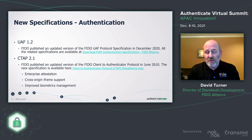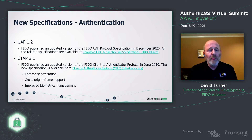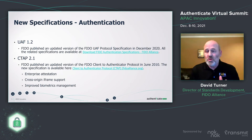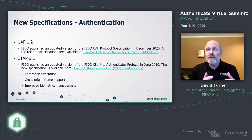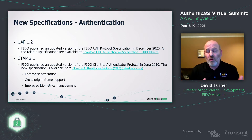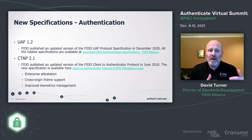These specs aren't new — they've been available for a number of years, but we recently did updates. The UAF specification was updated last December to version 1.2 with minor improvements. We updated our CTAP 2.1 specification, which coincided with the W3C's WebAuthn Level 2 release in June of this year. It included features like enterprise attestation, ability to manage PIN lengths, and cross-origin iframe authentication — important for online payments to provide a simpler, friction-free transaction.